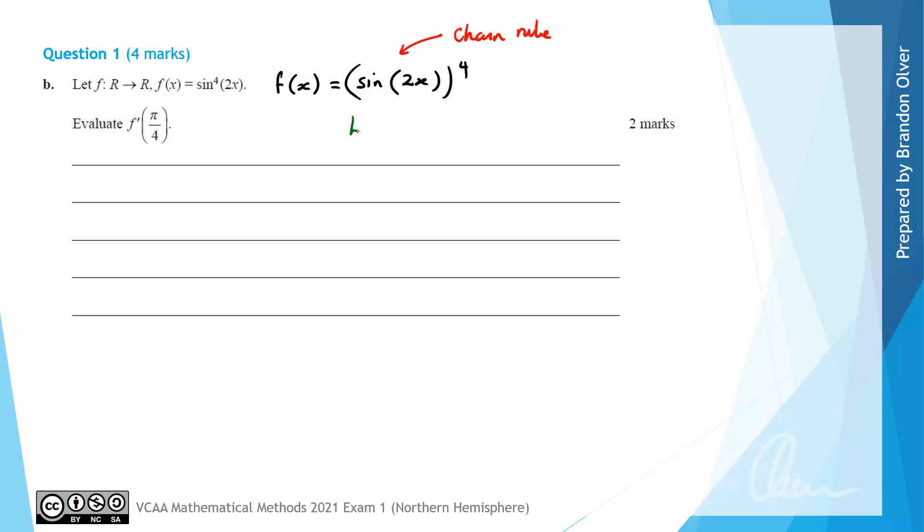So to apply the chain rule, I'm going to let the inner function be u. So we're going to have u is sine of 2x. Therefore, y is just equal to u^4. Next, we need to calculate du/dx. So the derivative of sine of 2x is 2cos(2x). And we also need to calculate dy/du, which is going to be 4u^3.